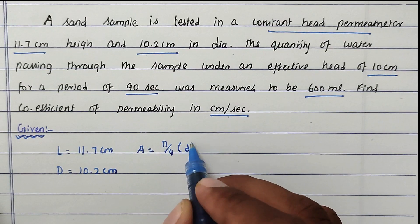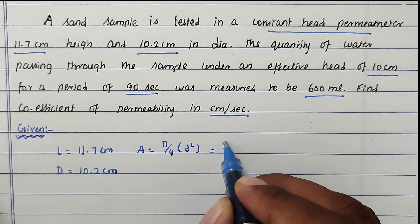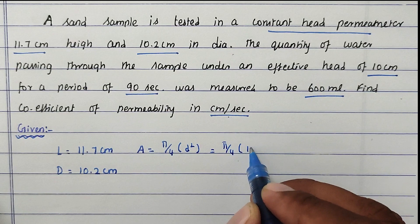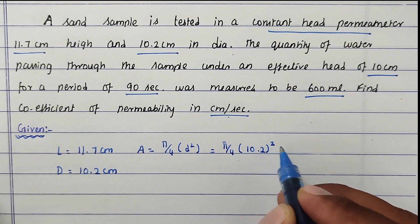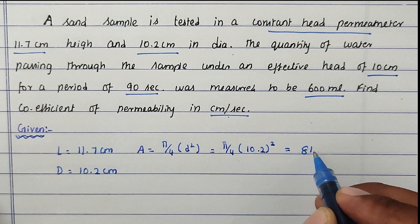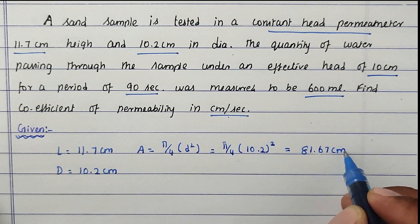So now the area, d². π/4 × (10.2 cm)² = 81.67 cm².